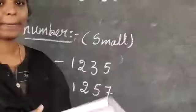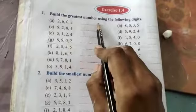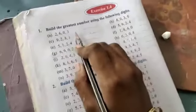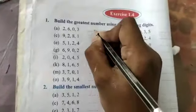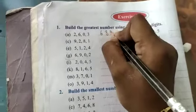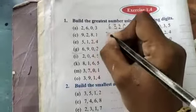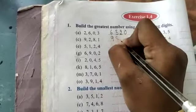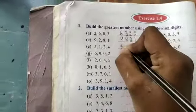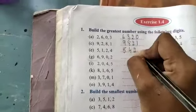Children, build the greatest number using the following digits. Ok children, first greatest number means big number you should write. First set: 6, 3, 2, 0. Here: 9, 8, 2, 1. Next: 5, 4, 2, 1.